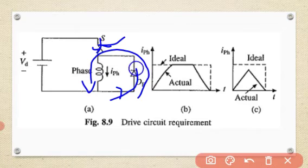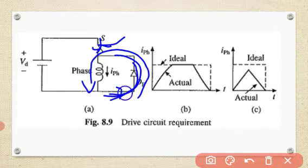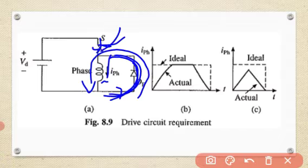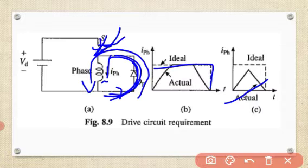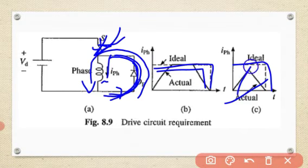When the switch is off, the current that flows through the freewheeling path should decay to zero so that we can start the next switching cycle. The ideal case is shown in dotted lines. This is especially important when high stepping rates are required, as demonstrated in figure 8.9C. The actual response is shown by the solid line. The drive circuit for stepper motors is designed to incorporate these requirements.